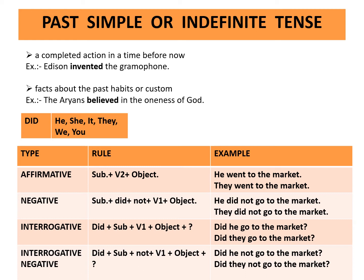Negative rule: subject plus did plus not plus first form of the verb plus object. Example: He did not go to the market. They did not go to the market. Interrogative rule: did plus subject plus first form of the verb plus object plus question mark. Example: Did he go to the market? Did they go to the market? Interrogative negative rule: did plus subject plus not plus first form of the verb plus object plus question mark. Example: Did he not go to the market? Did they not go to the market?